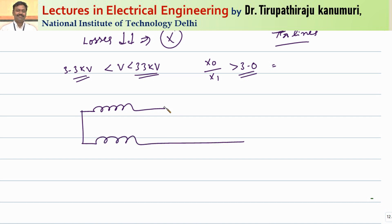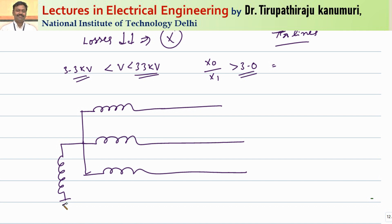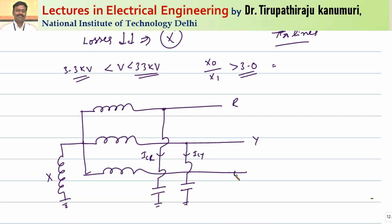These are the three phases connected through a reactor. The value of the reactor is decided accordingly to limit the fault current, since a minimum value of fault current is required so that switchgear and equipment can detect the fault. The current passing through the capacitor in the R phase is ICR, and in the Y phase is ICY. Assuming the fault has occurred, the fault current passes, and the sum of these two capacitor currents gives ICF — the capacitor current passing during the fault — all returning through the neutral wire.